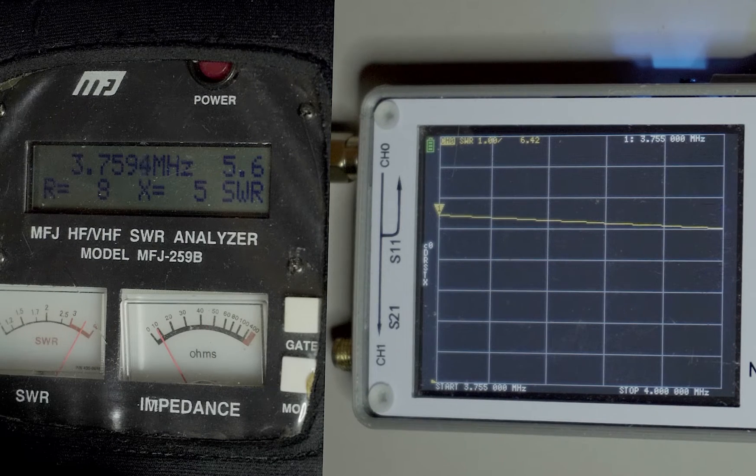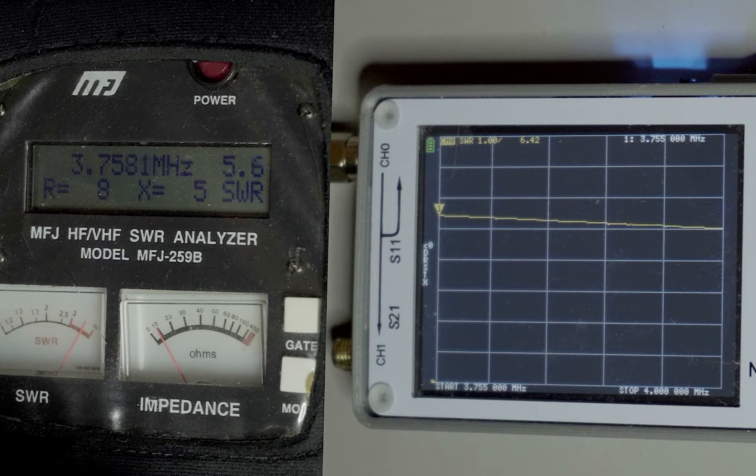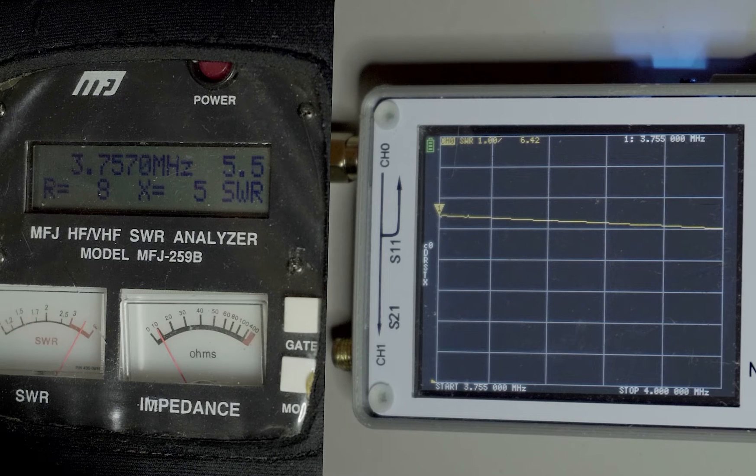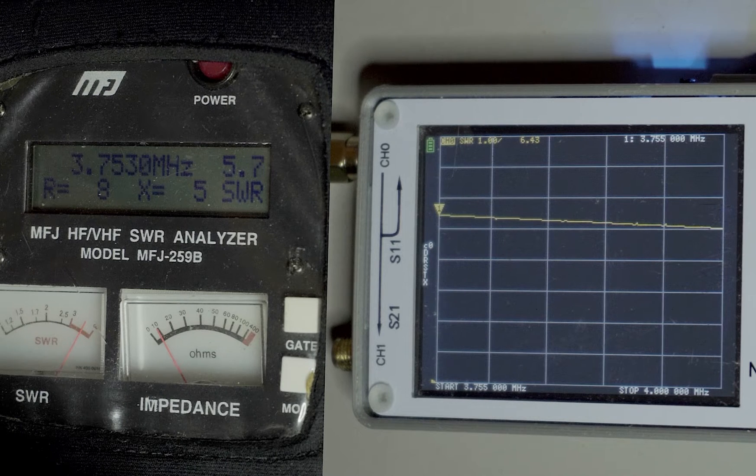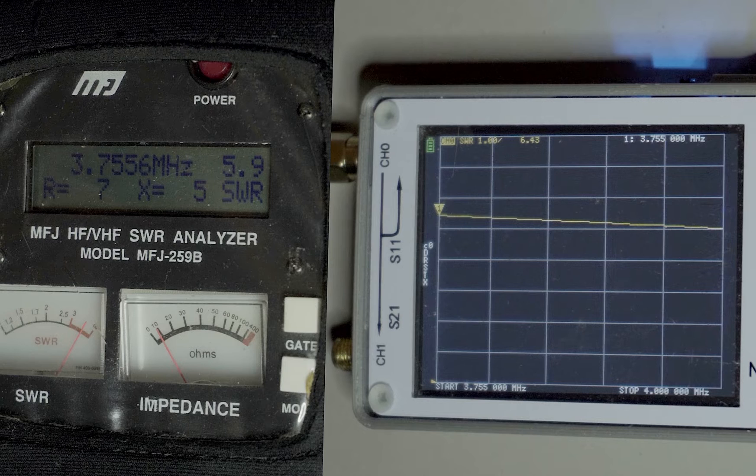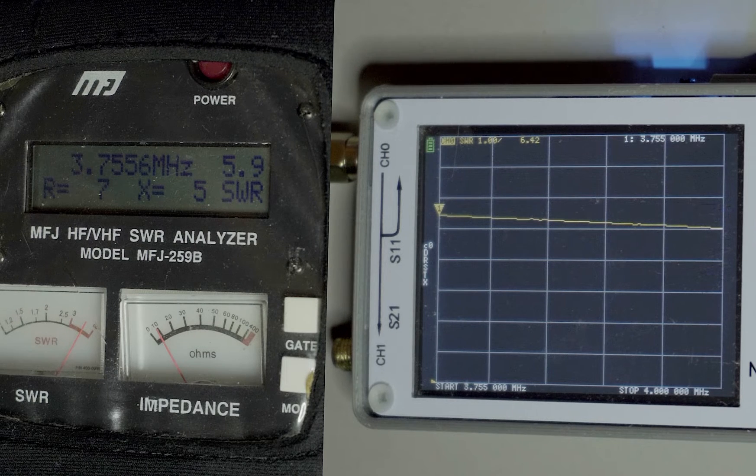Next, we're tuning into ONTARS on 80 meters, 3.755, and a bit of discrepancy here. 5.9 SWR on the MFJ and 6.42 on the Nano VNA.